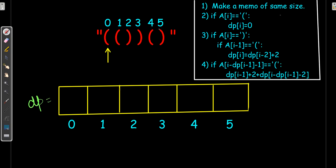Let's go through the algorithm. First, make a DP array of the same size as the input expression 'a'. Then while iterating, if we encounter an open brace, we simply put zero at that location and make no changes — because with an open brace, we can't yet know if we have a pair. We only determine valid pairs when we encounter a close brace.